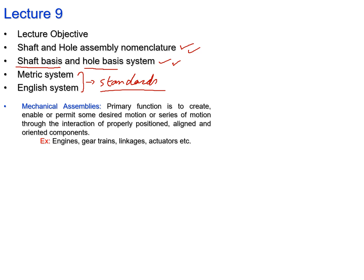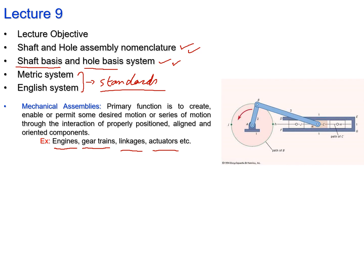We talked about assemblies in the lecture on threads and fasteners, where mechanical assemblies were discussed as being used to generate desired motion. Examples included engines. We also missed gear trains, linkages, and actuators. Looking at this diagram, these are linkages — they convert rotary motion. If this disc is rotating, we have translated that rotary motion into linear motion.